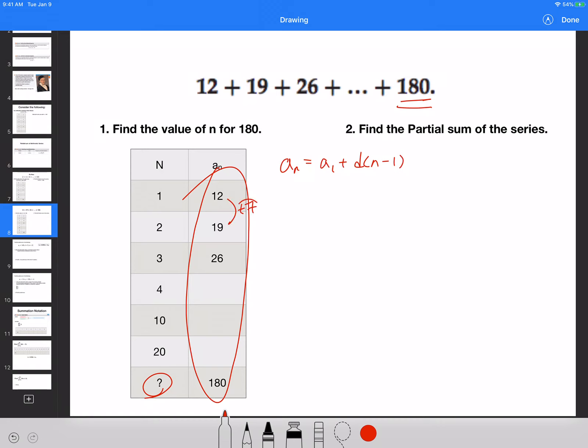So 180, that's my last term, equals the first term 12 plus 7 times n minus 1. 12 plus 7n minus 7, these two will make it 5. Subtract 5 on both sides, and I can divide both sides by 7 in this case, which gives me 25 is equal to n.